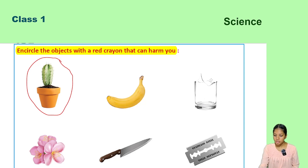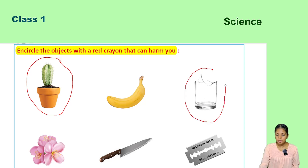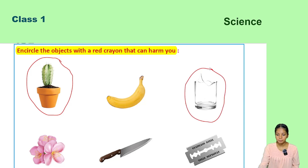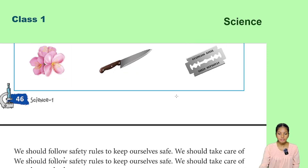Next object is a glass. This glass is broken, so it is harmful to us — we circle this too. In this way, you can look at the other images and identify which objects can harm you, then circle them.